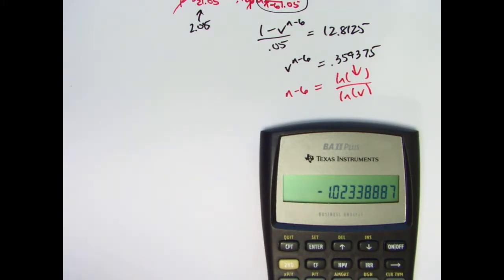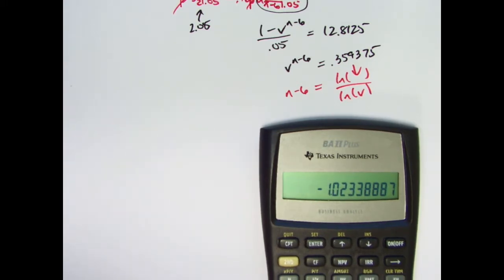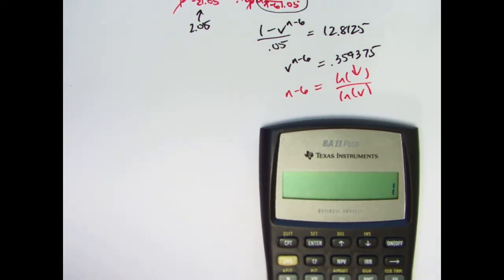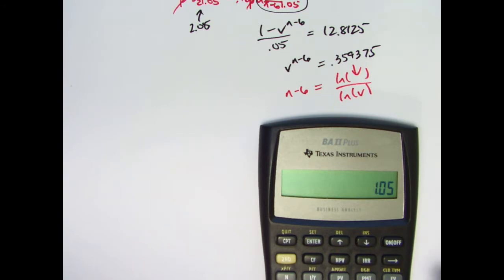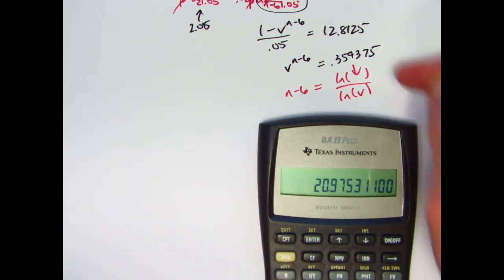I will store that in register 0. V is the reciprocal of 1.05. Its natural log is this. Take the reciprocal of that and multiply by what's in register 0 to get this fraction.